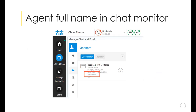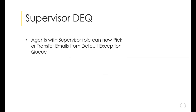A small but very useful enhancement for supervisors: supervisors can now see an agent's full name on the chat card while monitoring a chat. This gives supervisors additional insights so they can focus on and monitor chats for specific agents who need help — for example, new inductee trainees or agents with negative feedback. Earlier this wasn't visible and supervisors had to select individual chats to see what was inside; now they can see the agent name and pick and choose which chat to monitor.